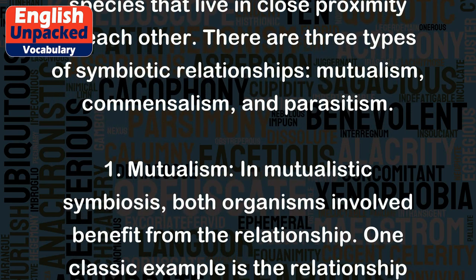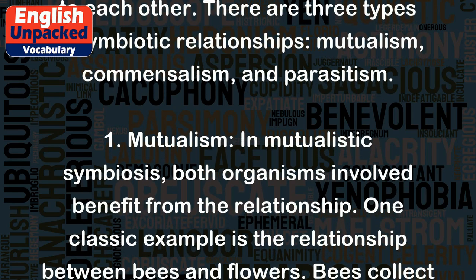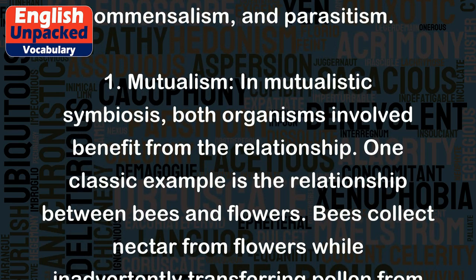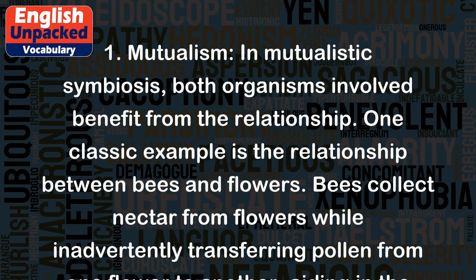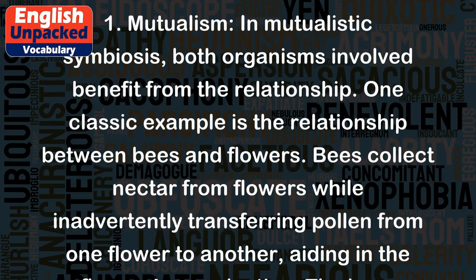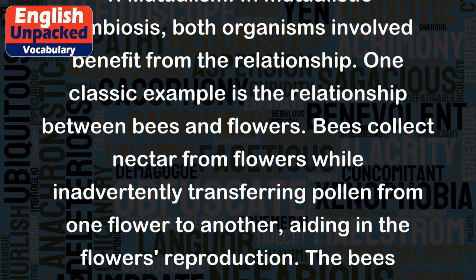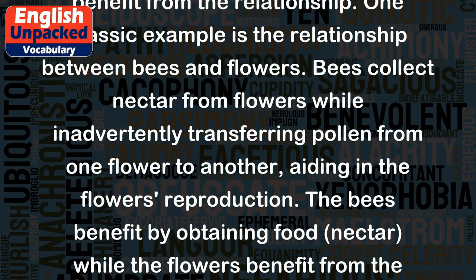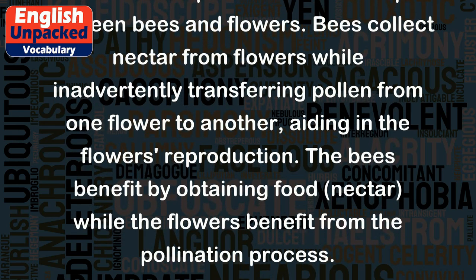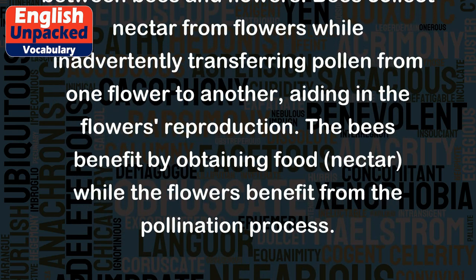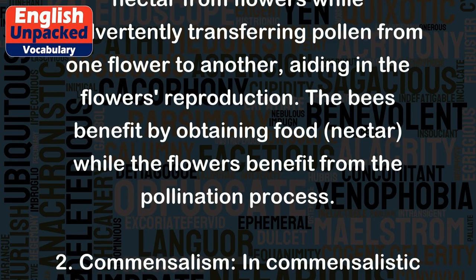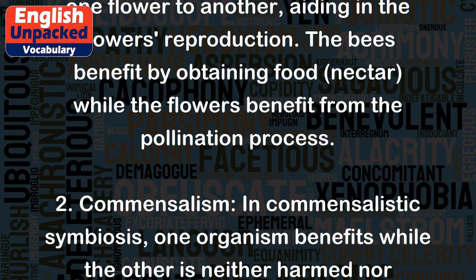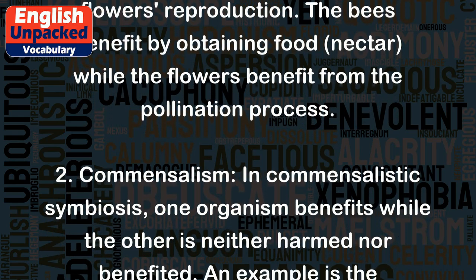1. Mutualism. In mutualistic symbiosis, both organisms involved benefit from the relationship. One classic example is the relationship between bees and flowers. Bees collect nectar from flowers while inadvertently transferring pollen from one flower to another, aiding in the flower's reproduction. The bees benefit by obtaining food — nectar — while the flowers benefit from the pollination process.